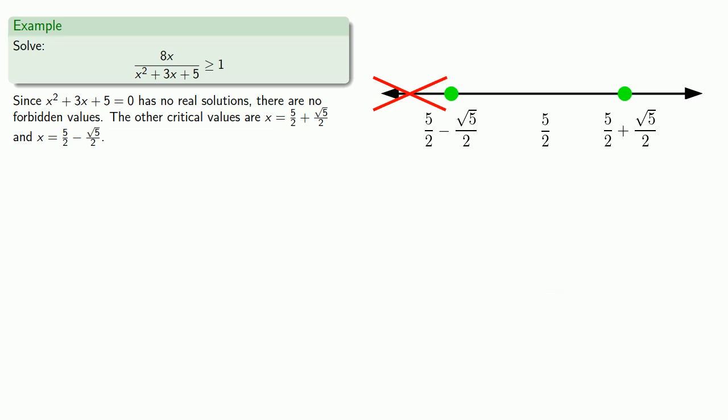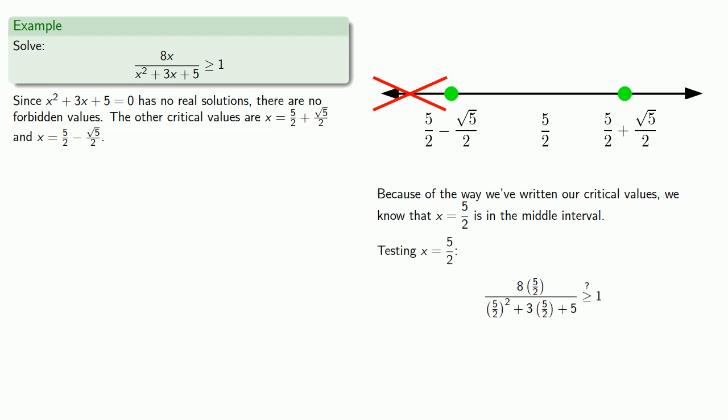Because of the way we've written our critical values, we know that x equals 5 halves is in the middle interval. And so we'll use x equals 5 halves as our test point. So testing x equals 5 halves, and after all the dust settles, we see that this is true, so we include the middle part.